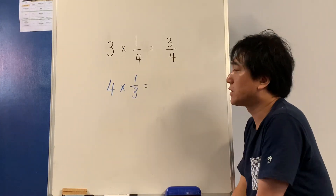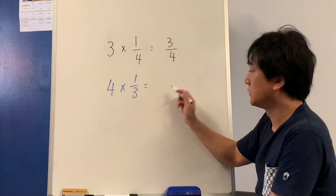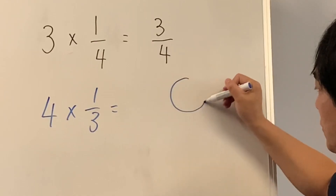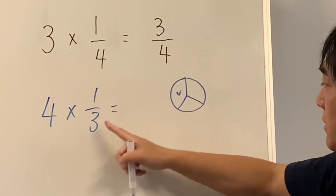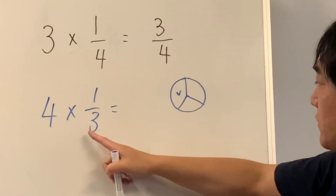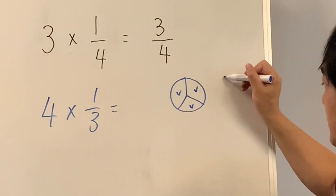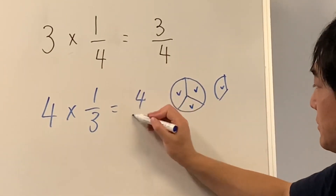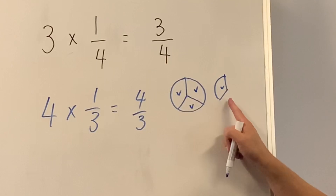So let's see what 4 lots of 1 third looks like. 1 lot of 1 third, 2 thirds, 3 thirds, and 4 thirds. Which is exactly the same as 1 whole cake and 1 third.